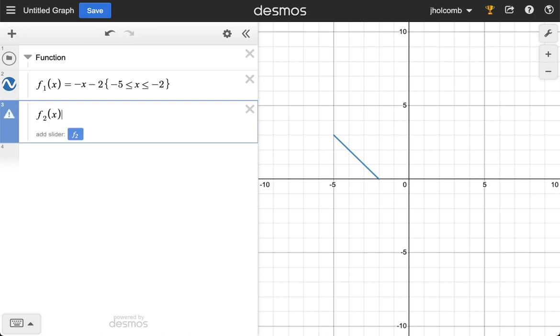I want to have our second function f₂(x) = x + 2, and I'm going to make a restriction for that. I want it to go from negative 2 ≤ x ≤ 0.